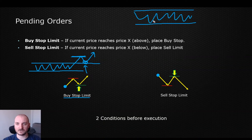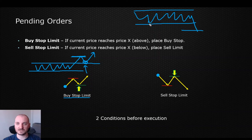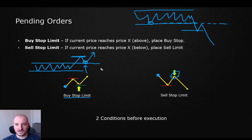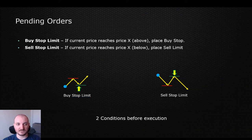The same story applies with the sell stop limit. Let's say you have a range or you're waiting for a low to be broken. You can say: let the price break below this low and move downwards, then I'd like to see the pullback up to this zone right here, and this is where I want my sell order to be executed.